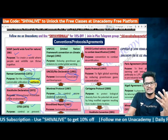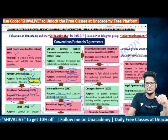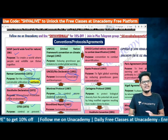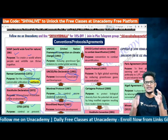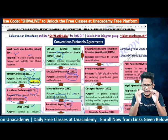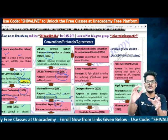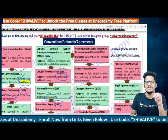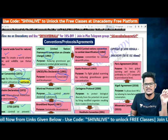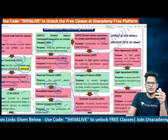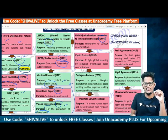UNFCCC — United Nations Framework Convention on Climate Change — emerged from the 1992 Rio Summit. Its purpose is reducing greenhouse gases (not phasing them out entirely) as much as possible to combat global warming. UNCCD, also from Rio 1992, focuses on combating desertification as its main purpose.